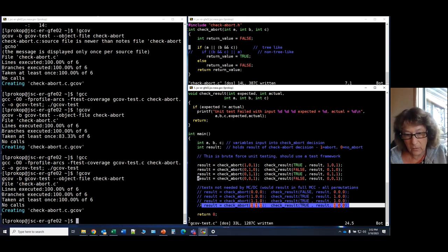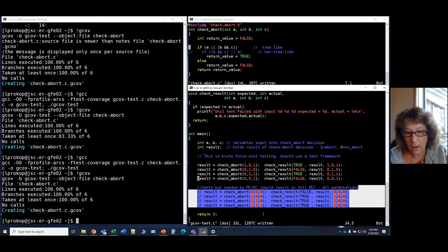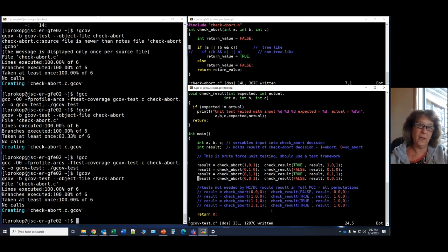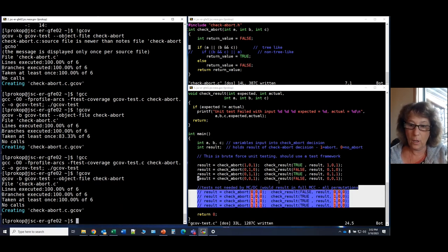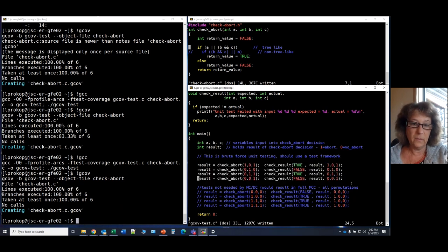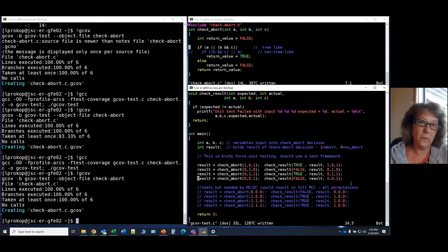One addendum, I have these other tests written down here. That would complete the full set of eight tests needed to do full MCC, multiple condition combination coverage, which is all the permutations. But the note here is you don't need these tests. They're redundant. Doing these four tests, MC/DC actually tests all the meaningful combinations to logically test this code.